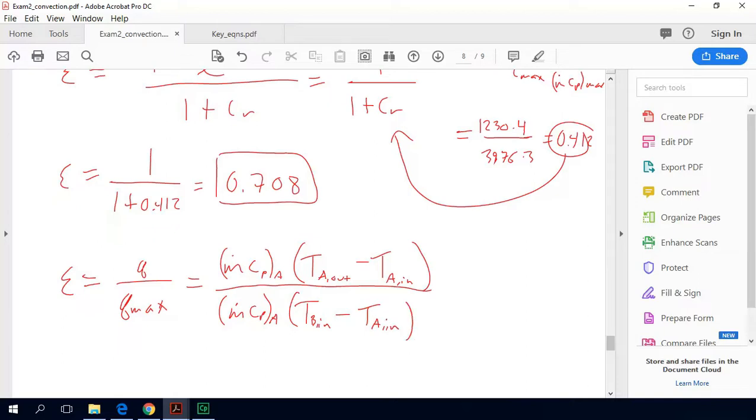So because we get the same ratio, this ends up just being what's the relative temperature change of fluid A, relative to the maximum possible temperature change it could undergo.